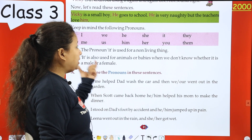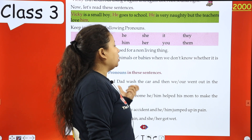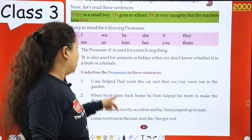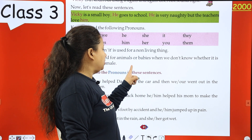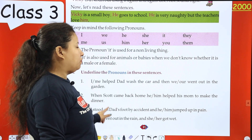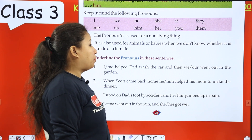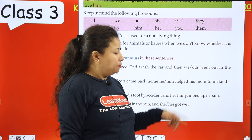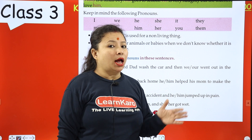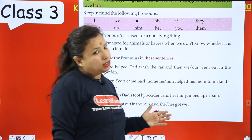The pronoun 'it' is used for a non-living thing — a lifeless thing. It is also used for animals or babies when we don't know whether it is male or female. For example, if you see a dog and don't know its gender, use 'it'. Similarly, for a small baby whose gender is unknown, we use 'it'.